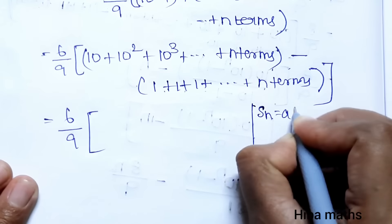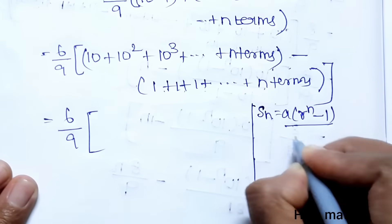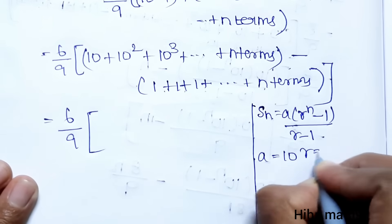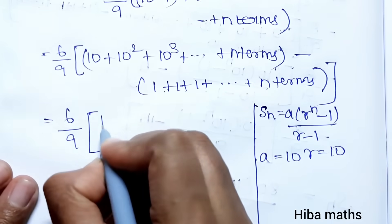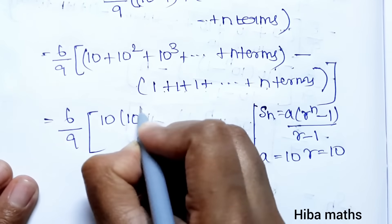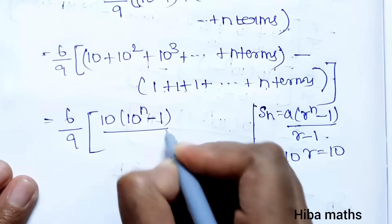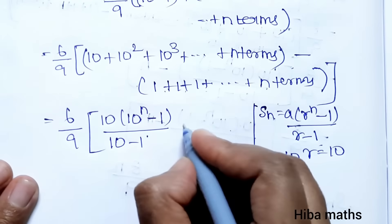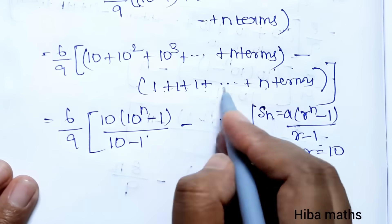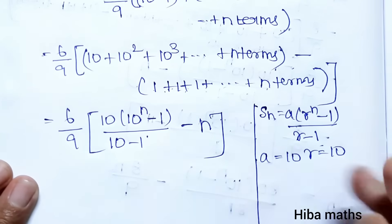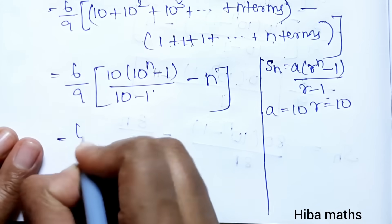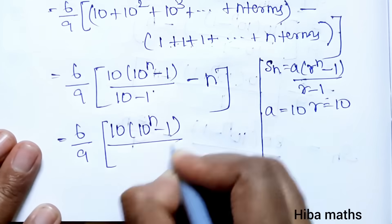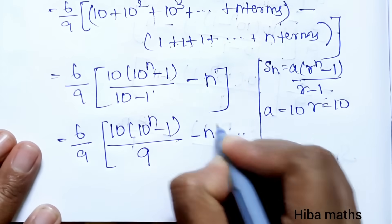Applying the GP formula S(n) = a(rⁿ − 1)/(r − 1) with a = 10, r = 10, the GP sum is 10·(10ⁿ − 1)/9. So S(n) = (6/9)·[10·(10ⁿ − 1)/9 − n].